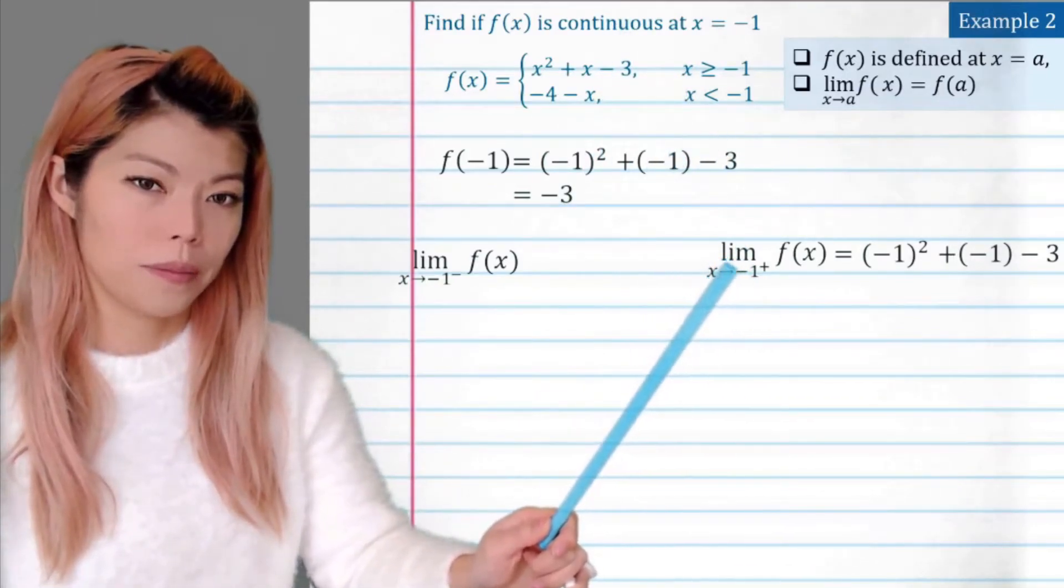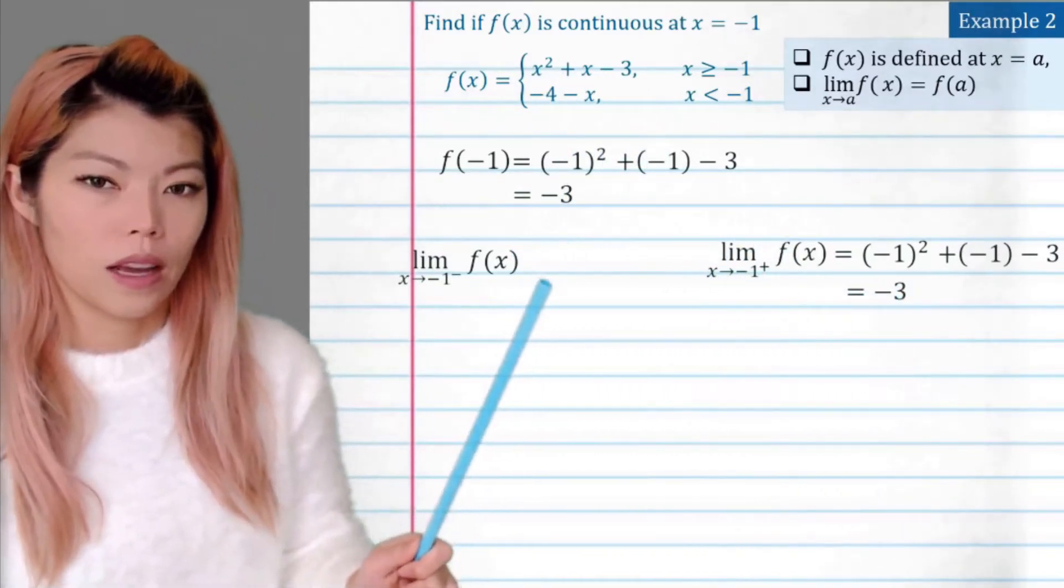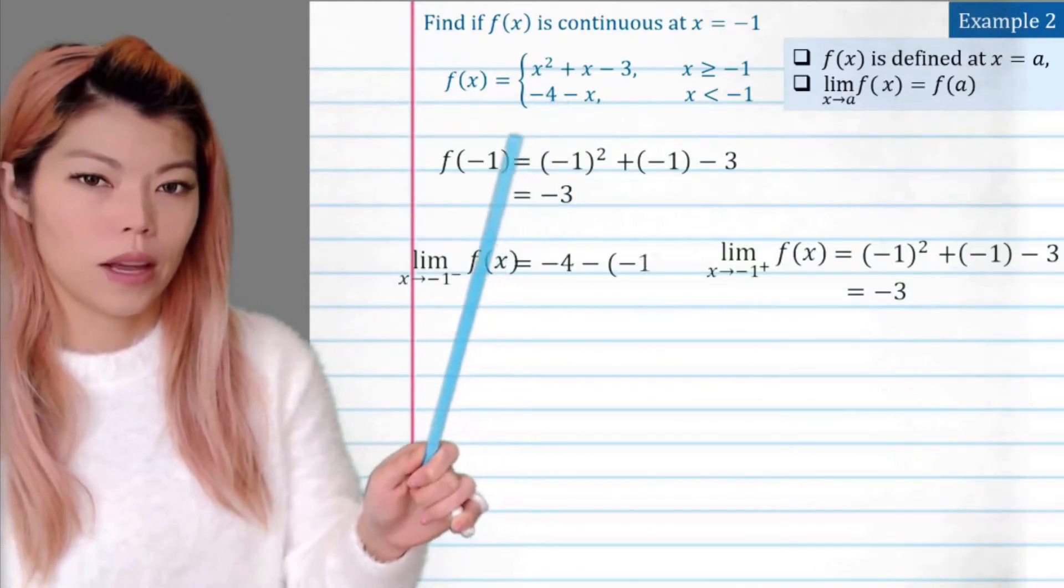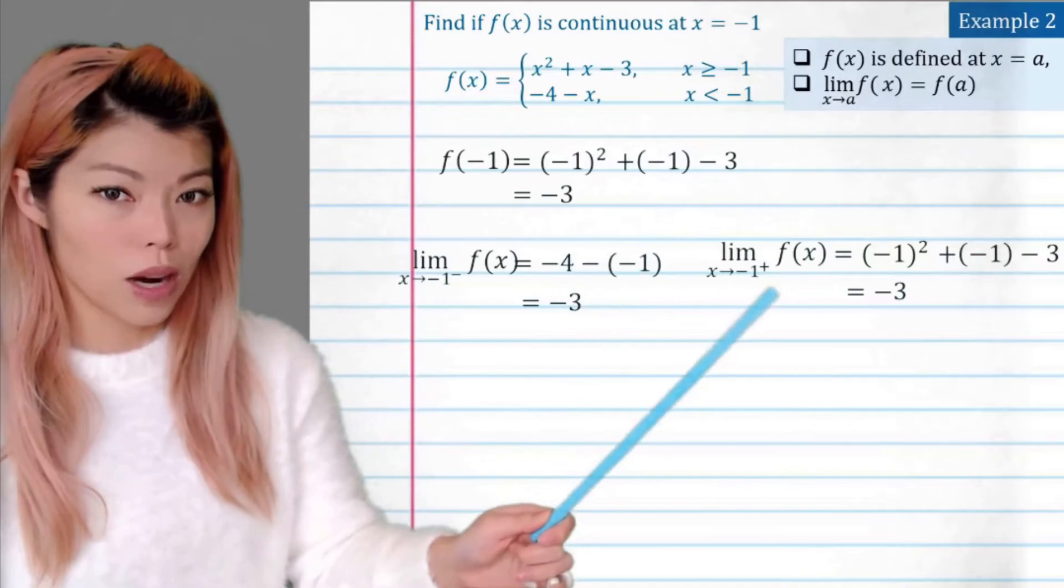So we sub that in, so negative 1 into all that, and we have negative 3. And for the left side, we're using this, so sub that in, and we get negative 3. So the left limit and the right limit are the same.